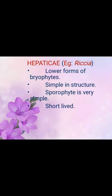The first class is Hepaticae, with the example Riccia. Riccia is the lower form of bryophytes and is simplest in structure. The body structure is very simple and the sporophyte is also very simple and short-lived.